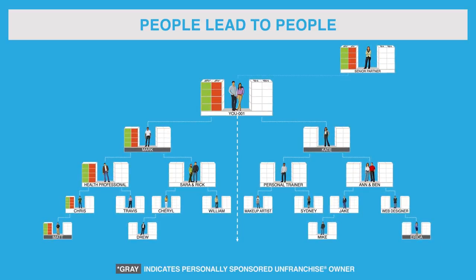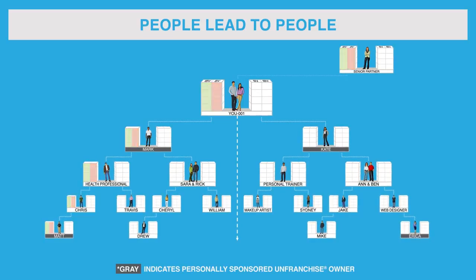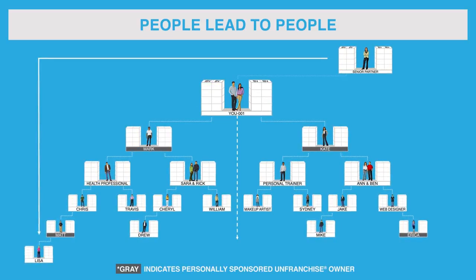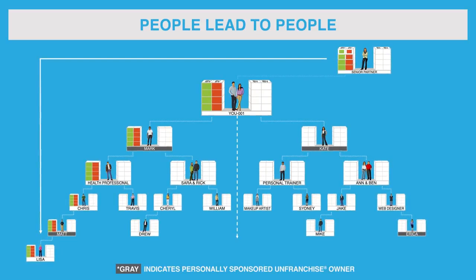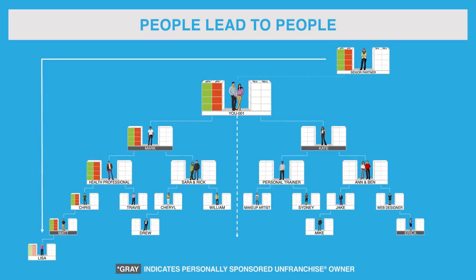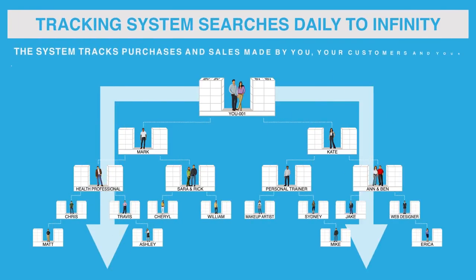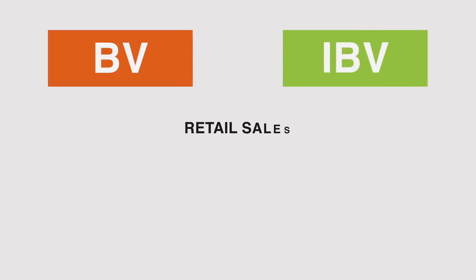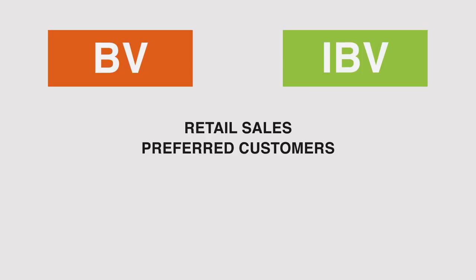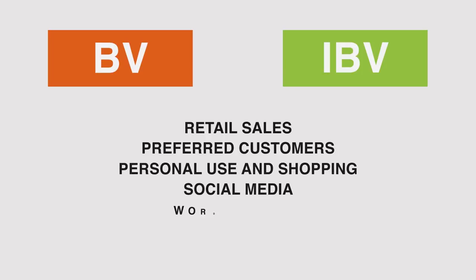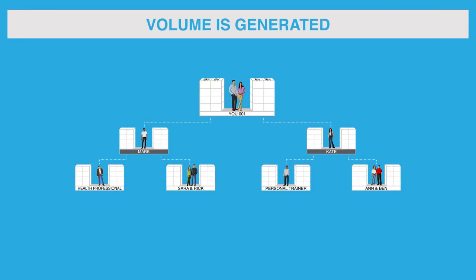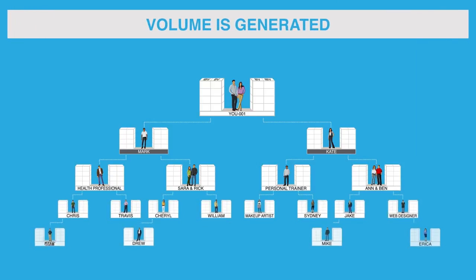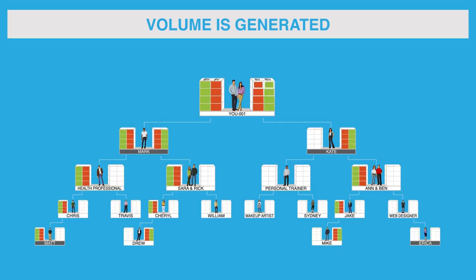Remember, you are connected to a team of unfranchise owners who have a financial interest in your success. Your senior partners who are continuing to develop their unfranchised business can also place unfranchised owners within your organization that they personally sponsor. Each day, our tracking system searches infinitely in depth to calculate all the BV and IBV created within your organization. BV and IBV are created from retail sales, preferred customers ordering from your shop.com site, personal use and shopping, social media, and word-of-mouth advertising. In addition, volume is generated by new unfranchised owners establishing their business, qualifying their business development centers, and converting their spending into earning as they create their own shopping annuity.